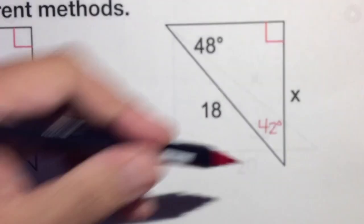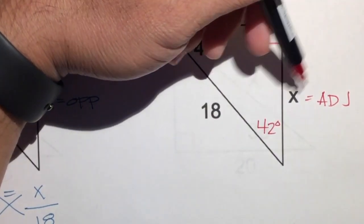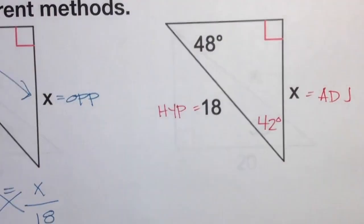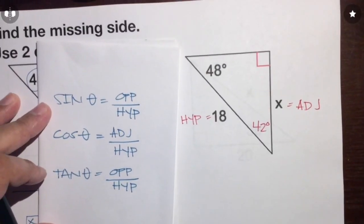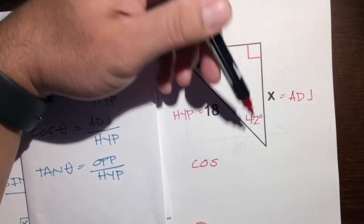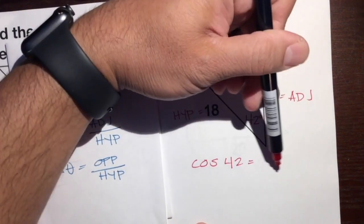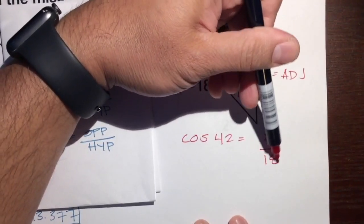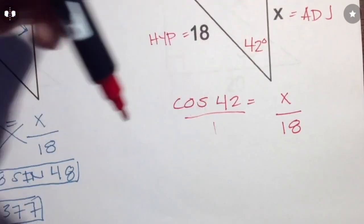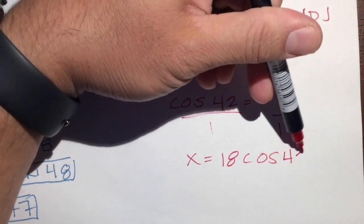Now focusing on this triangle with the 42-degree angle: x is the adjacent side — it's next to the 42 but not the hypotenuse. The hypotenuse is 18, opposite the 90-degree angle and the longest side. We have adjacent and hypotenuse, so we're going to use cosine. Cosine of 42 equals x over 18.